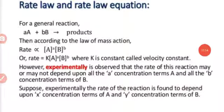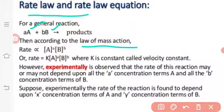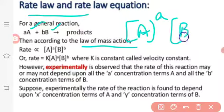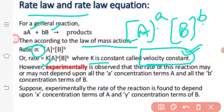Next is rate law and the rate law equation. For a general equation aA + bB → products, according to the law of mass action, the rate is proportional to the concentration of A raised to power a, and concentration of B raised to power b. So rate equals k × [A]^a × [B]^b, where k is the velocity constant.